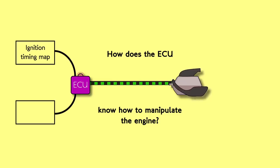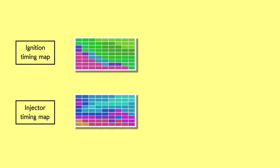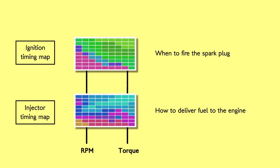Particularly the ignition timing map and the injector timing map. These two maps are essentially just tables again that tell the engine when to fire the spark plug and how much fuel to deliver into the cylinder by looking at the engine speed or RPM and the amount of torque currently working the engine.